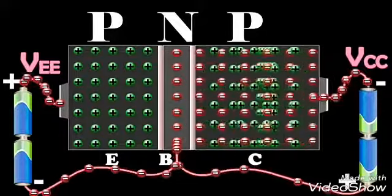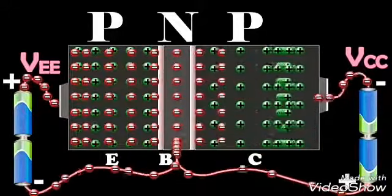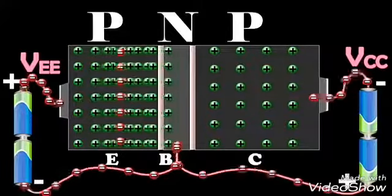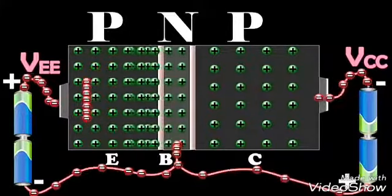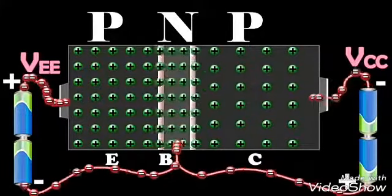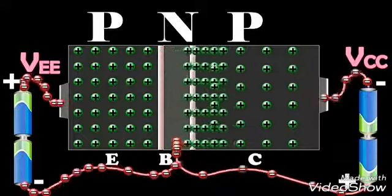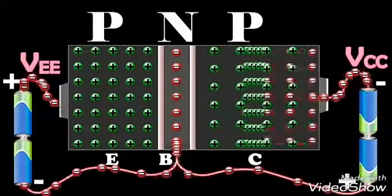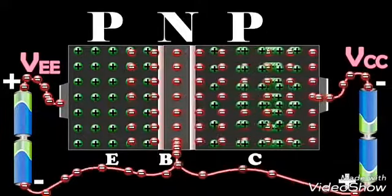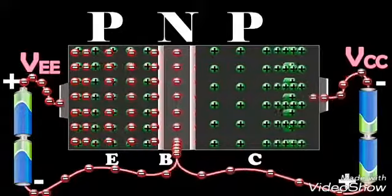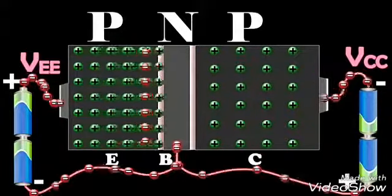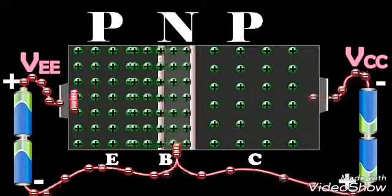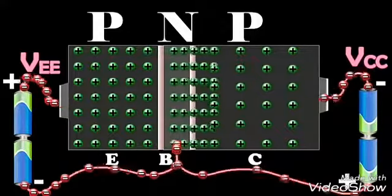At the same time, an equal number of electrons flow from the negative terminal of VEE and reach the positive terminal of VCC. The flow of holes per second from the base to the collector gives rise to the collector current IC from the base to the collector.